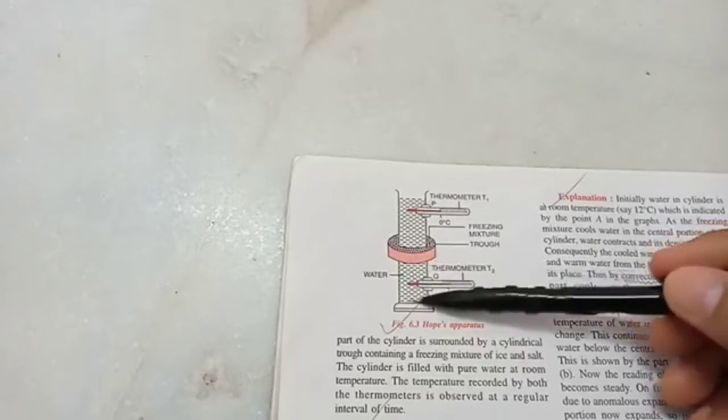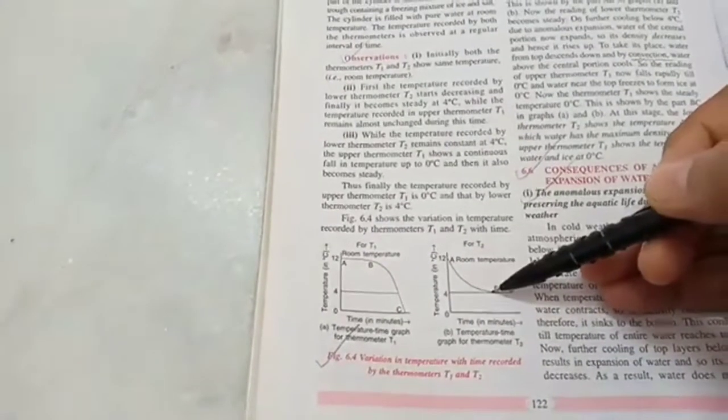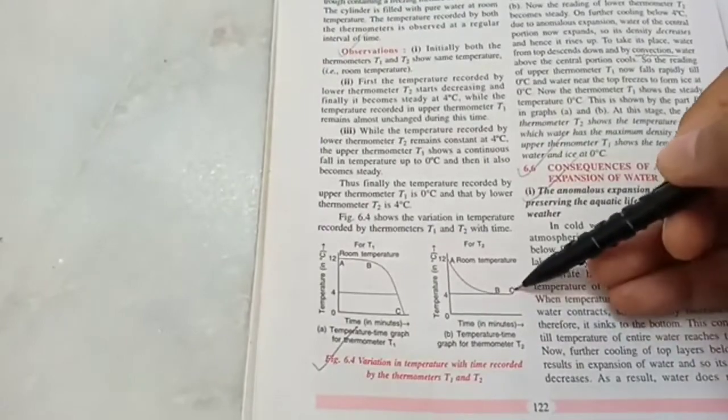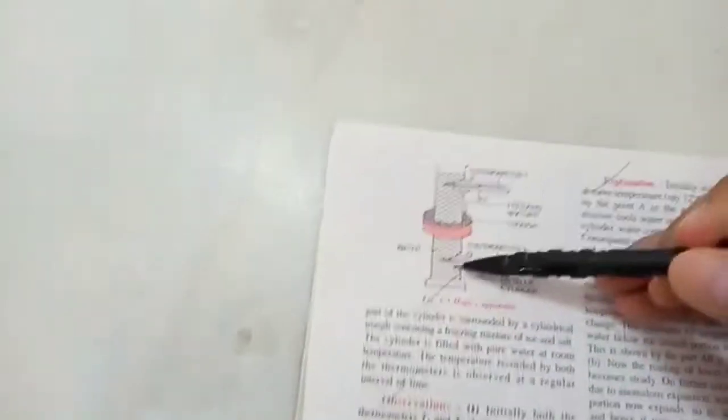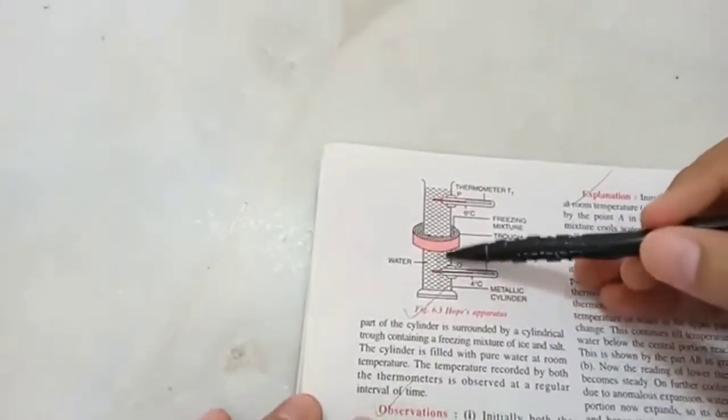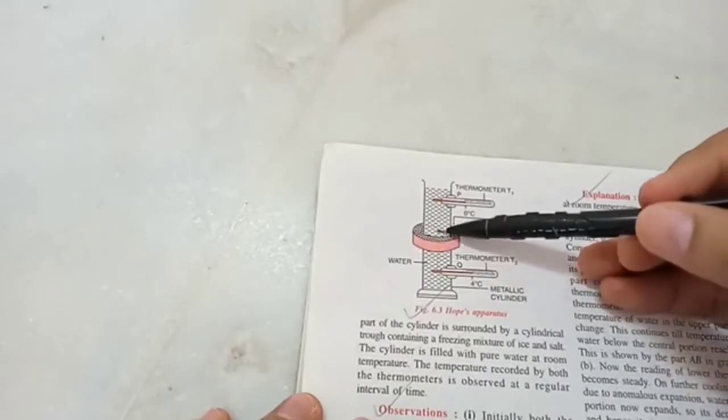It gets heated or cooled only by convection. And here what is happening is that the cold water is just settling down. So the lower water becomes cool. But that continues only till 4 degree Celsius. After that it does not continue to cool further. So slowly this entire water becomes 4 degree Celsius.